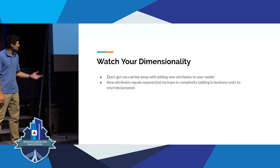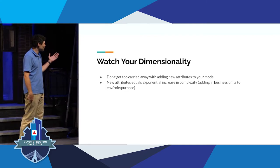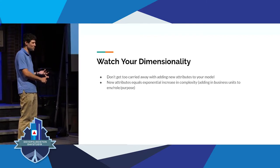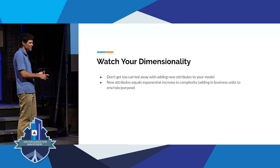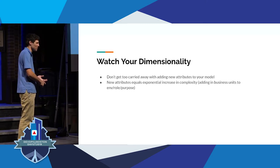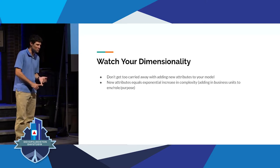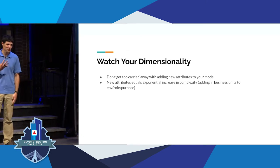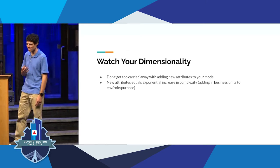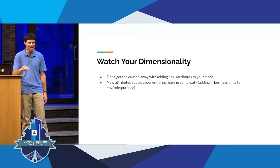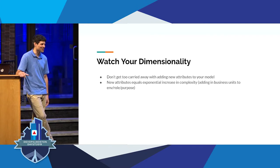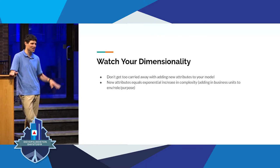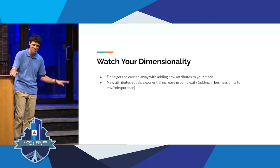We added business units when we already had separate environments with different roles — roles being things like application server, worker, queues — and then we added purpose. So now we've got four different dimensions to reason about. It took a lot of refactoring and thinking to make sure we didn't break everything already running while still being able to support new services.